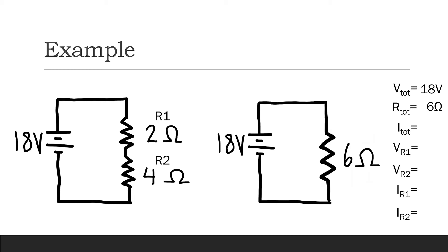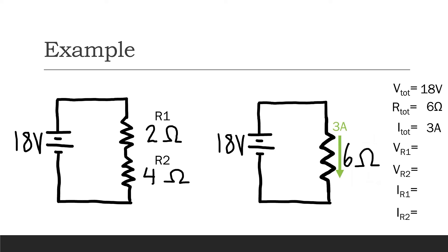Now that we've found the equivalent resistance, we want to find the total current. Since this circuit has just one resistor, we can use Ohm's Law: I equals V over R. In this case, that's 18 volts over 6 ohms, which gives us 3 amps. So the total current for our circuit is 3 amps.